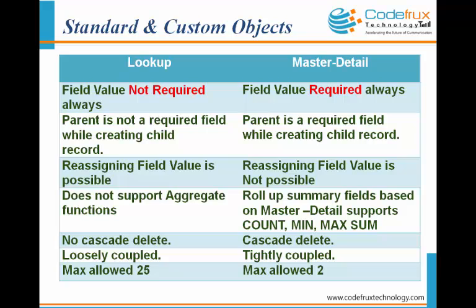There is no cascade deletion in a lookup relationship. Cascade deletion means that if you delete the parent record, the related child records also get deleted — this happens in master detail but not in lookup. Essentially, lookup relationship is loosely coupled, meaning the child is independent of the master, while master detail relationship is tightly coupled, meaning the detail is always dependent on the parent record and cannot be independent of it.